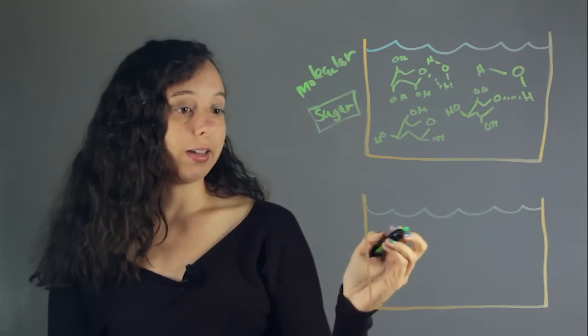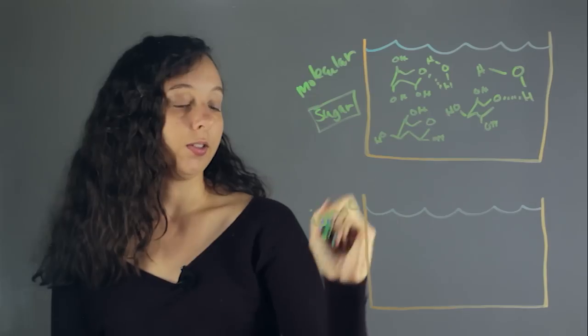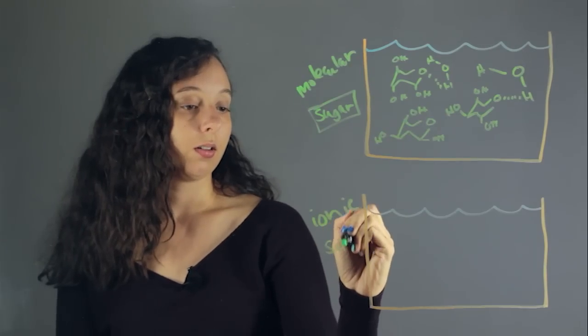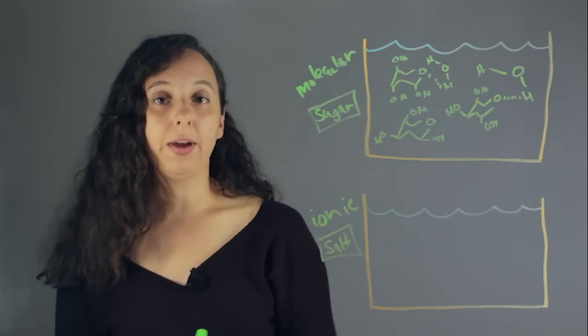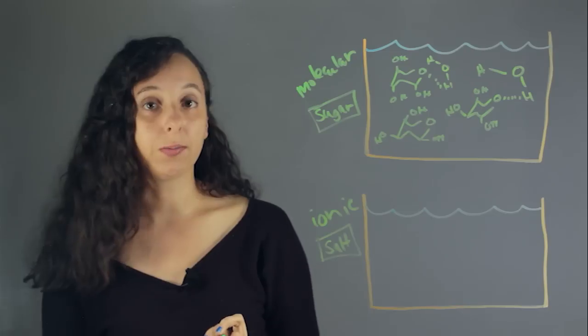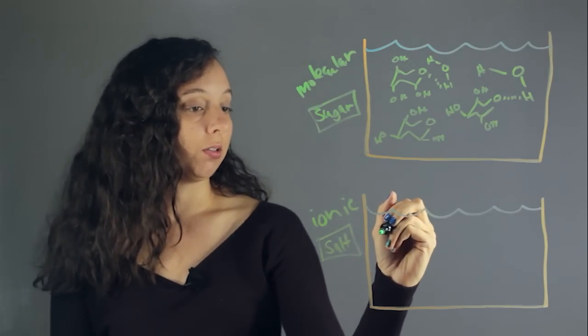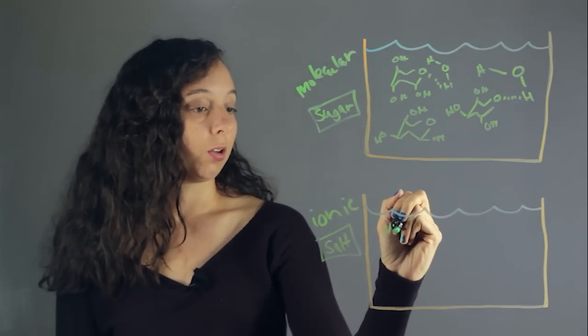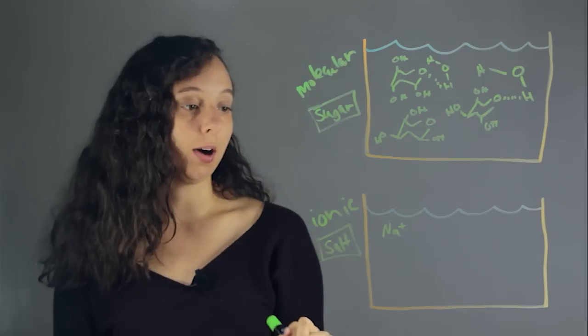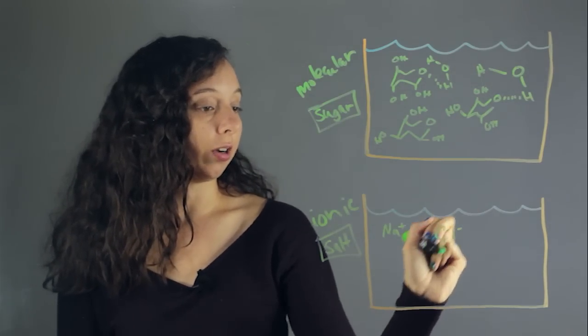But let's look down at ionic. And so a great example of ionic compound is salt or sodium chloride. So in solution, sodium chloride completely dissociates into positively charged sodium and negatively charged chlorine.